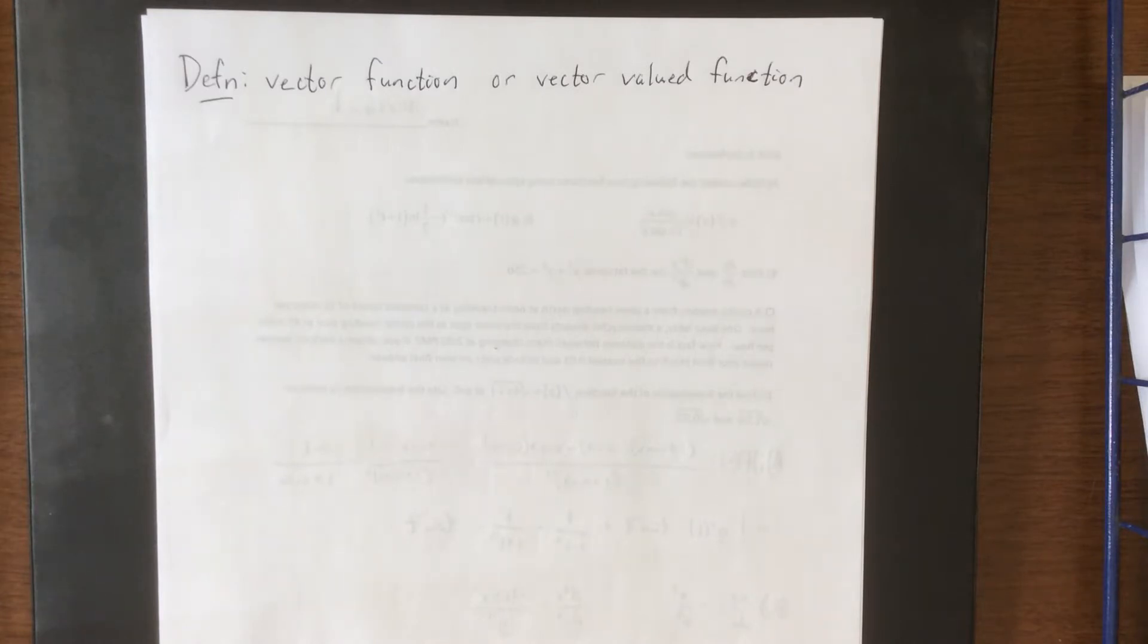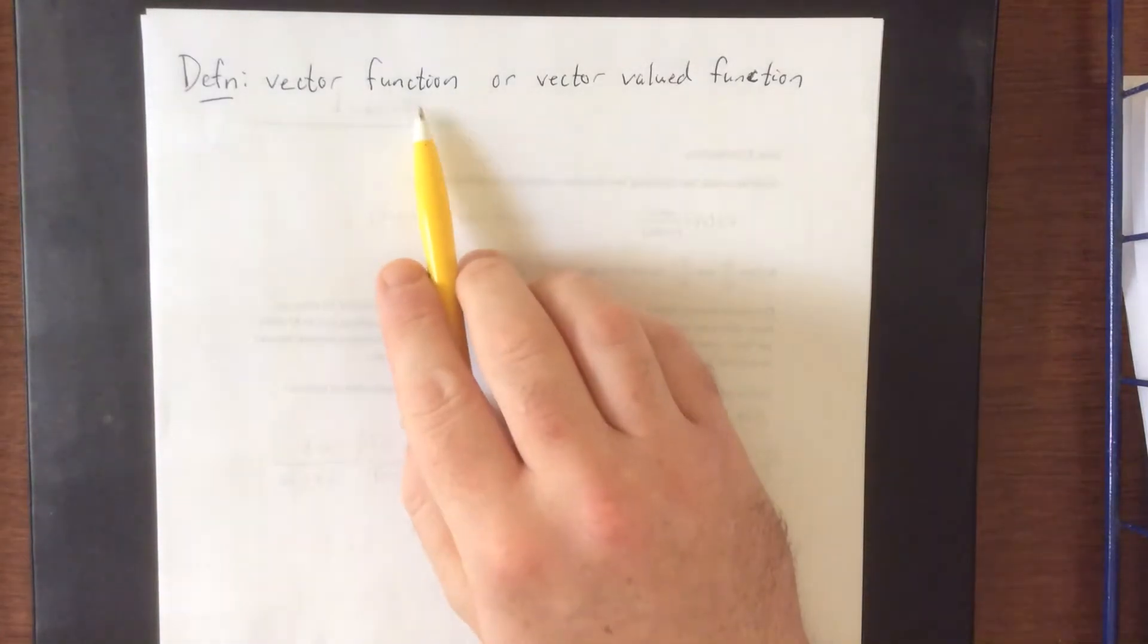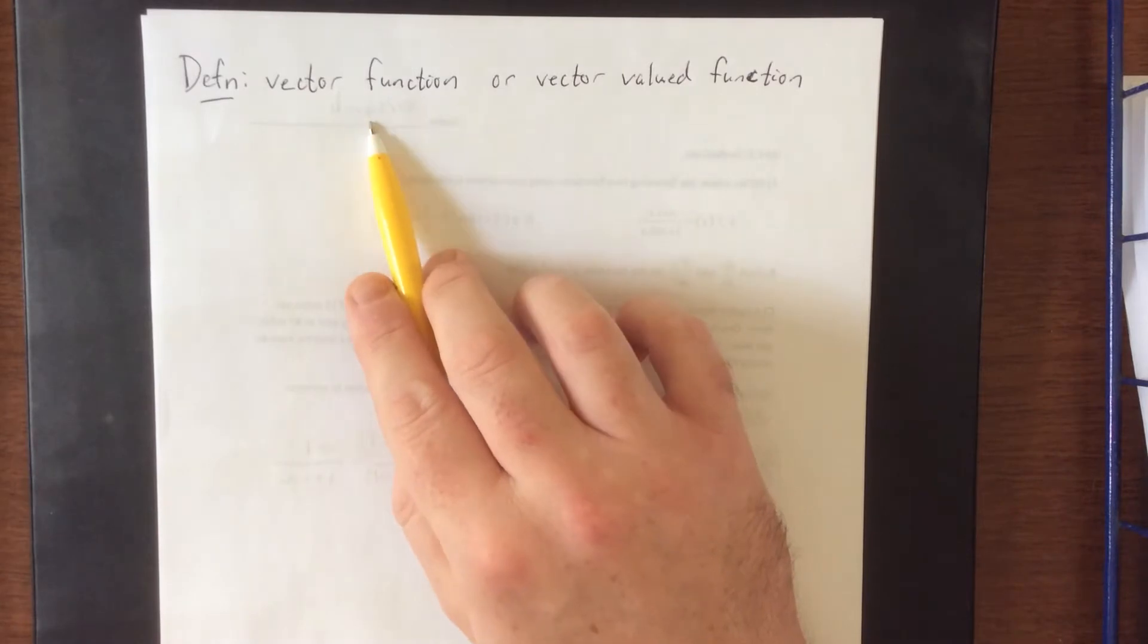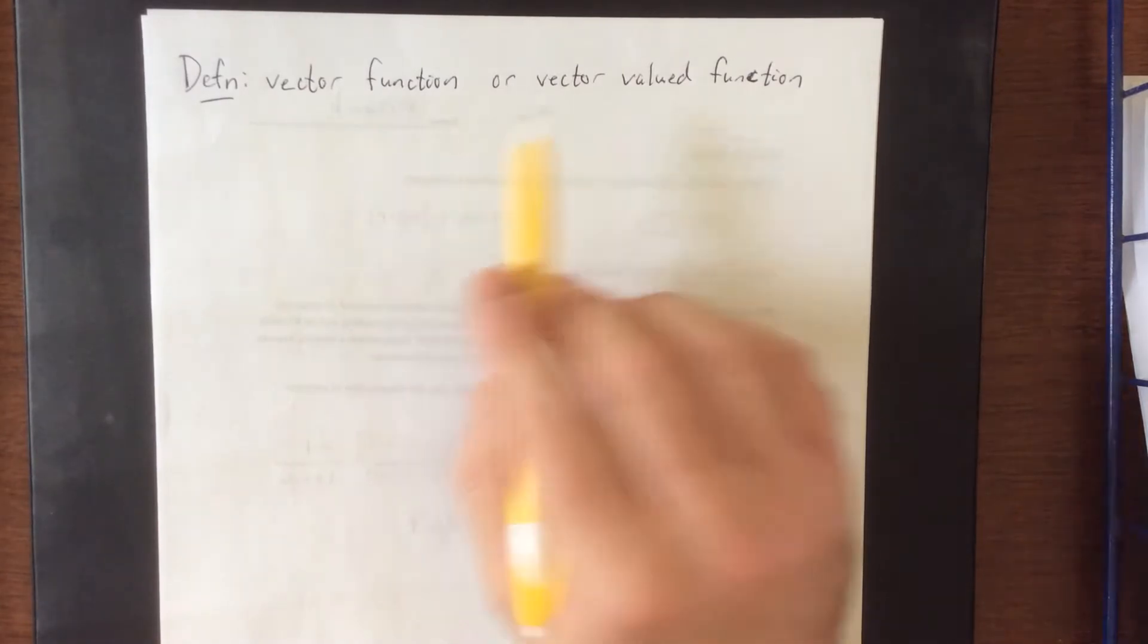So the definition that we're going to give is a vector function or a vector-valued function. The two titles are synonymous. Keep in mind that when we say the word function, this is a concept that we know from our pre-calculus days. A function is a relation where we give it an input, and the function gives us a unique output.